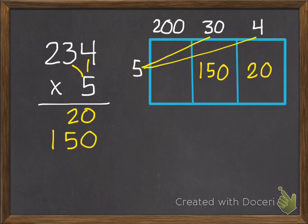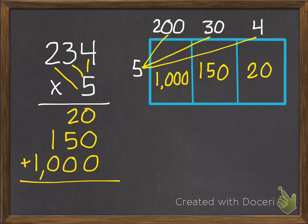Then I multiply my hundreds. Five times two hundred is one thousand. If I did that on the left, five times two hundred is one thousand. Then I add my three parts up. So zero plus zero plus zero is zero. Two plus five plus zero is seven. One plus zero is one. One plus nothing is one. One thousand one hundred seventy.